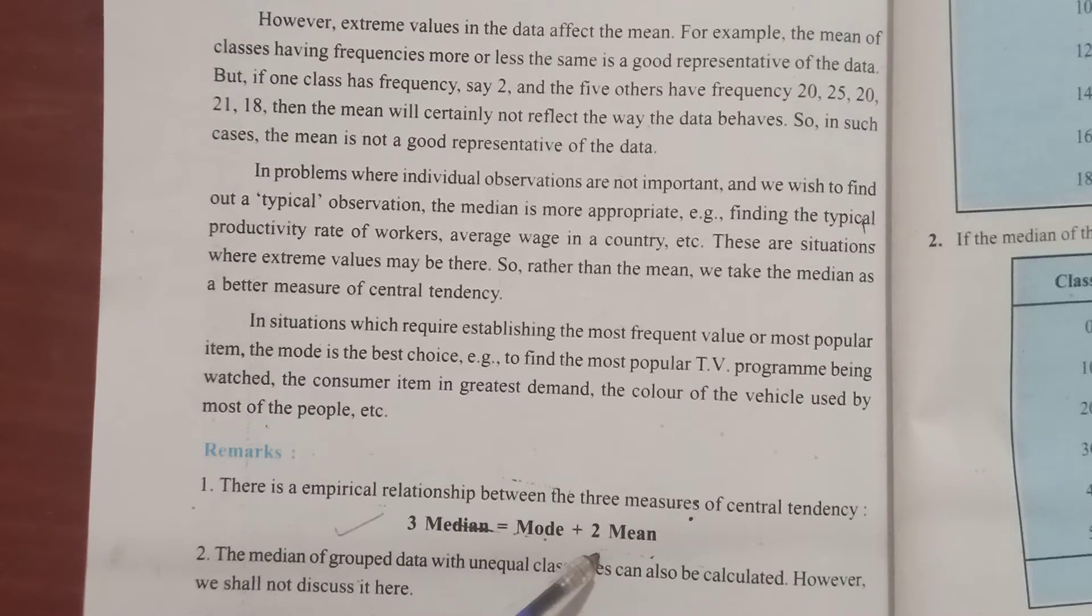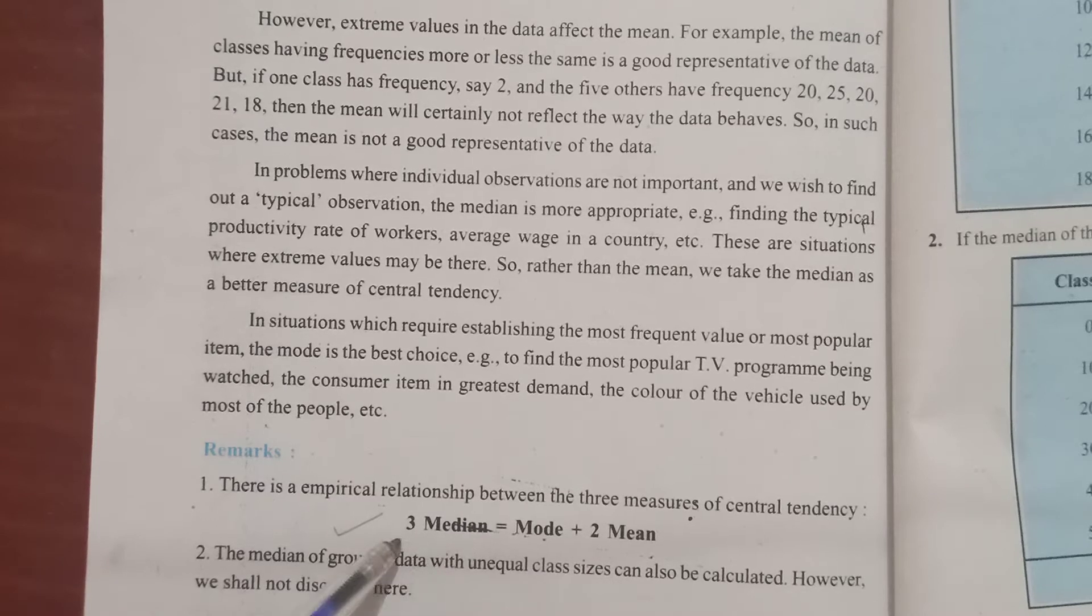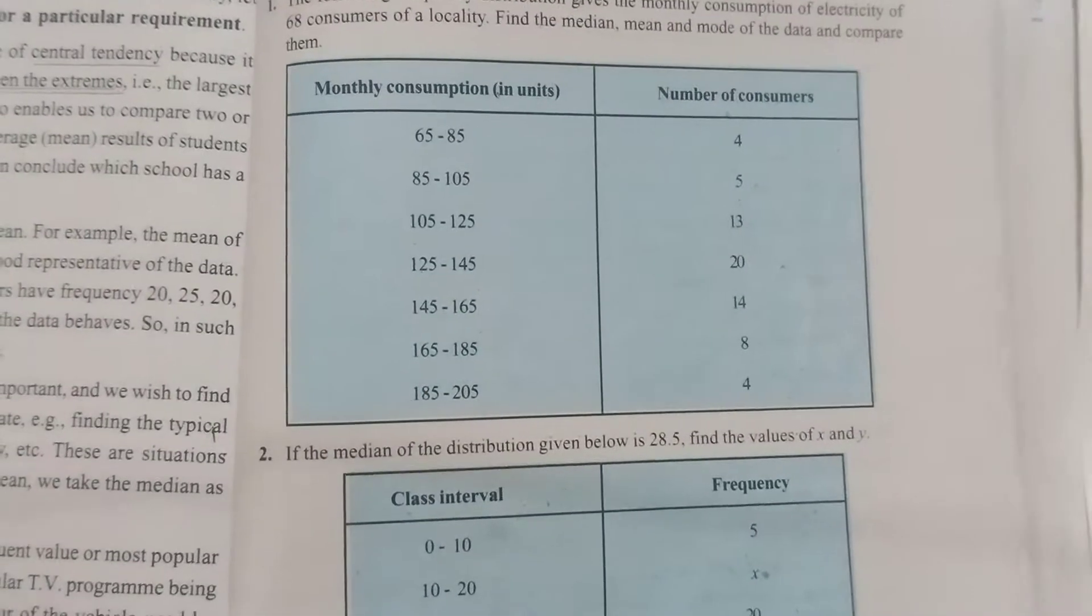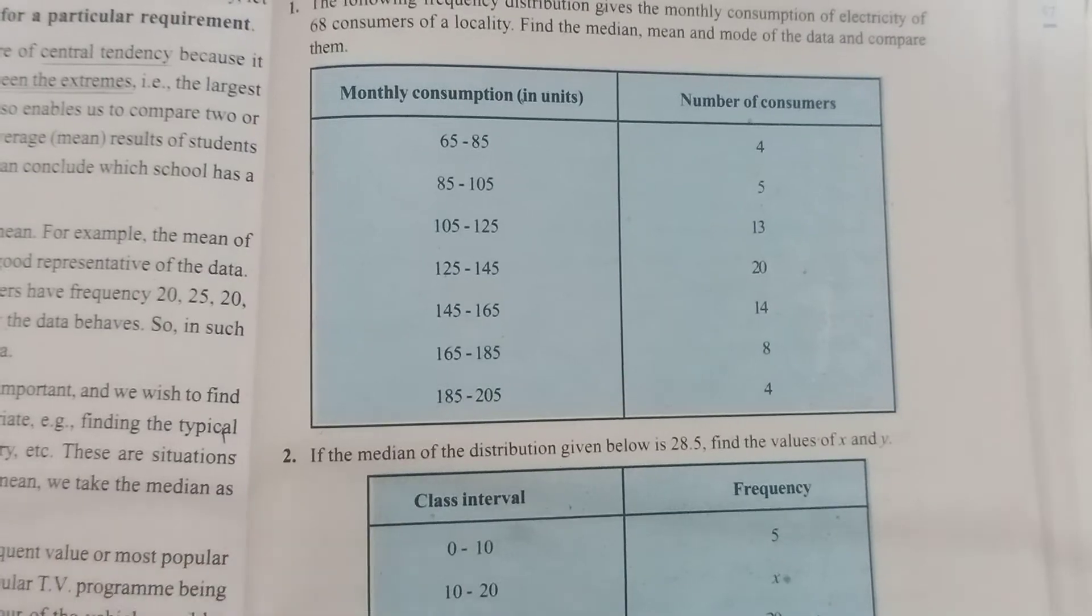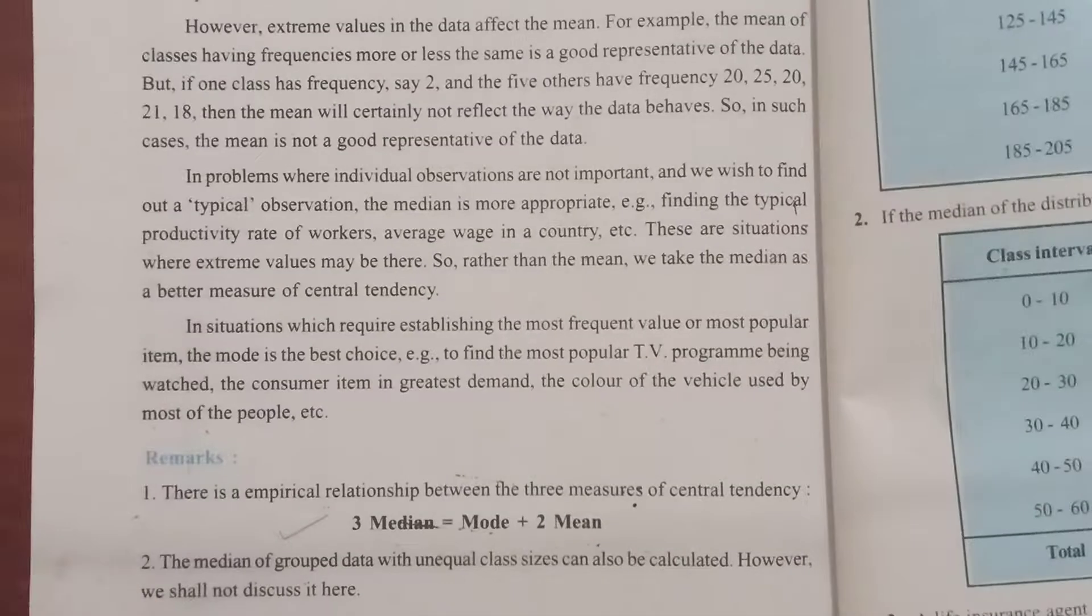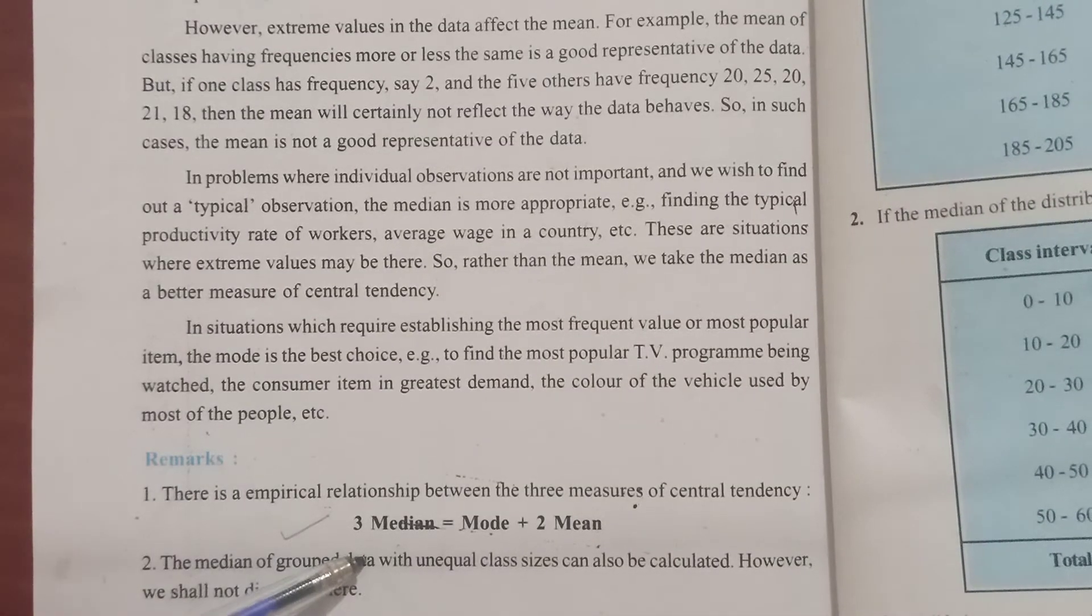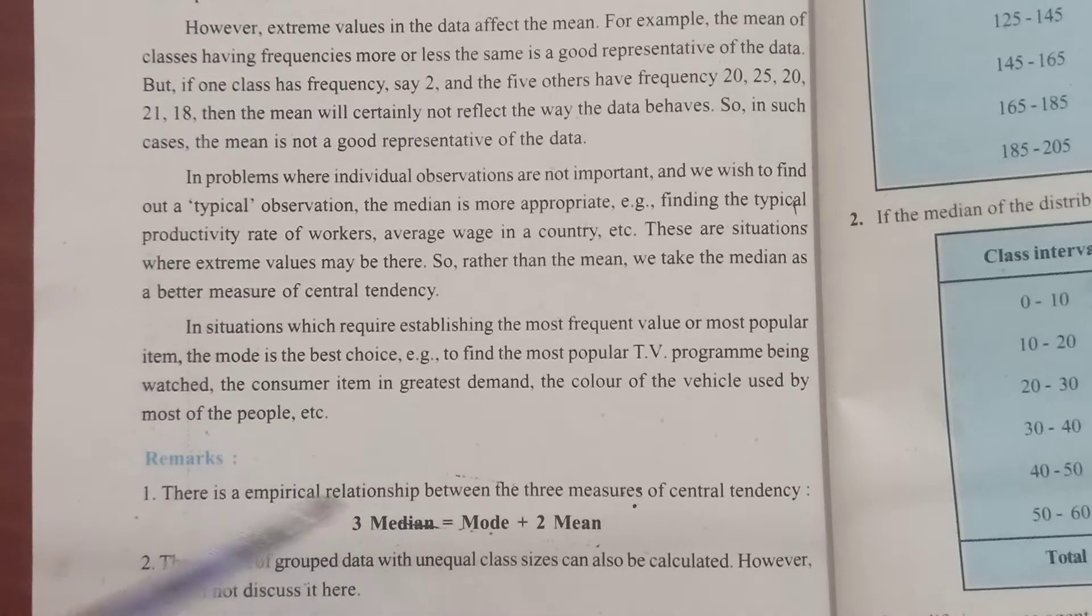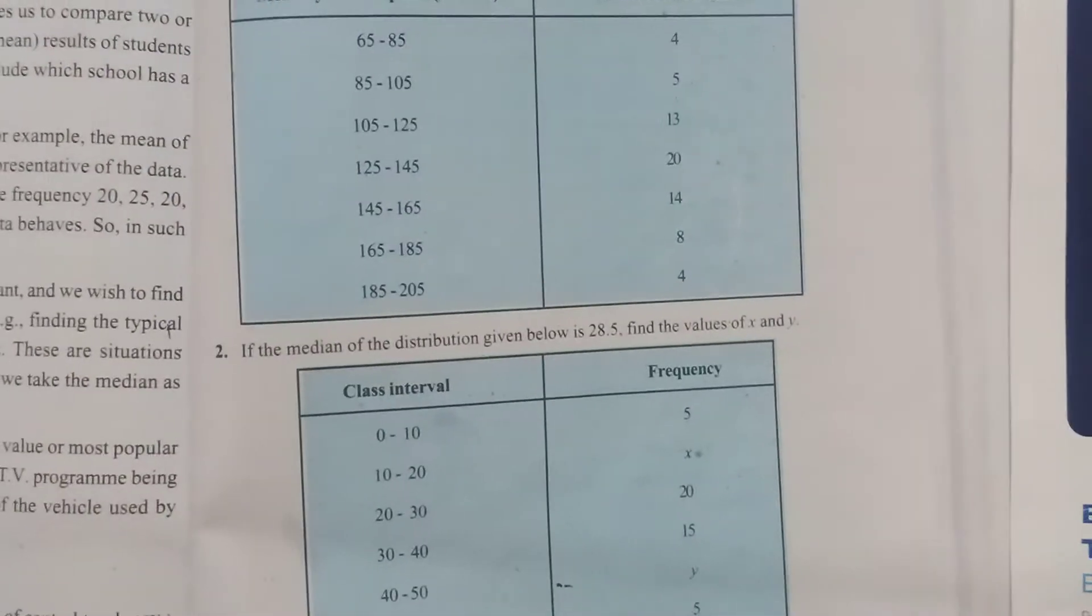If in any question they ask you to find all the three, then what can be done is you can find any two first and you can also use this relation to find the third measure of central tendency. Or maybe you can find all the three by formula, but then there will be too much work there. Remember this relation - even maybe for multiple choice, this relation can be useful and can be asked.